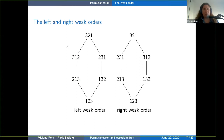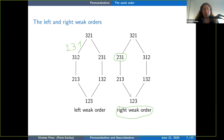For example, the inverse of 3 1 2: you look at the position of 1 — it's position 2; the position of 2 — it's position 3; the position of 3 — it's position 1; and you obtain 2 3 1. So these two orders are isomorphic through permutation inversion. It's good to have both in mind. I mostly use the right weak order, and I'll also show you how to interpret it geometrically.